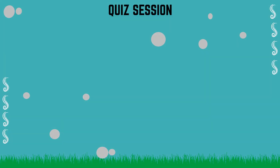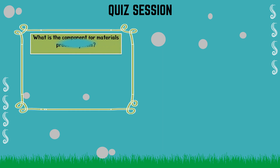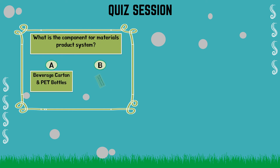Now let's go to the quiz session. What is the component for the materials product system? A: Beverage carton and PET bottles. B: Beverage carton and PE granulate. The answer is A — beverage carton and PET bottles.